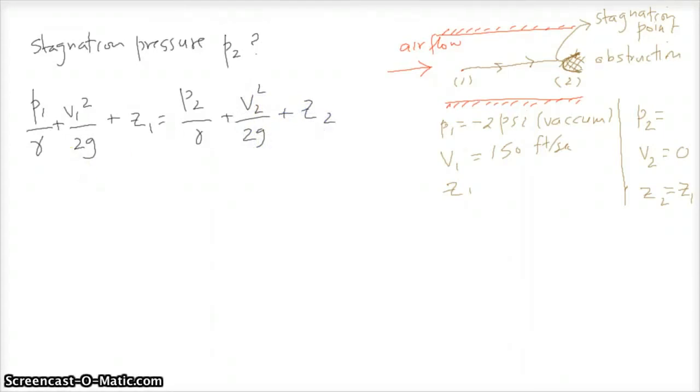We can immediately see that some of these things will go away. Z1 is equal to Z2 and V2 is equal to zero. So what we are left with is an equation that can give us P2. So stagnation pressure P2 will be equal to P1, gamma will cancel, plus half rho V1 squared.